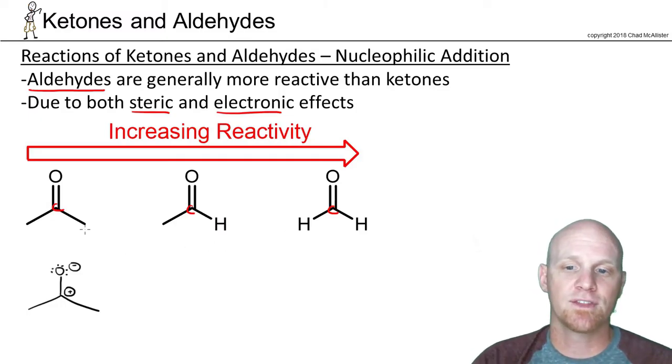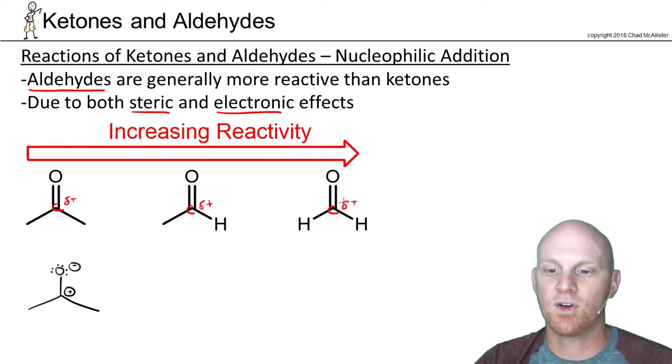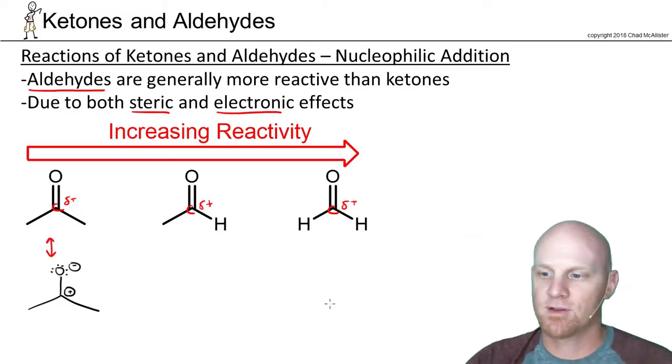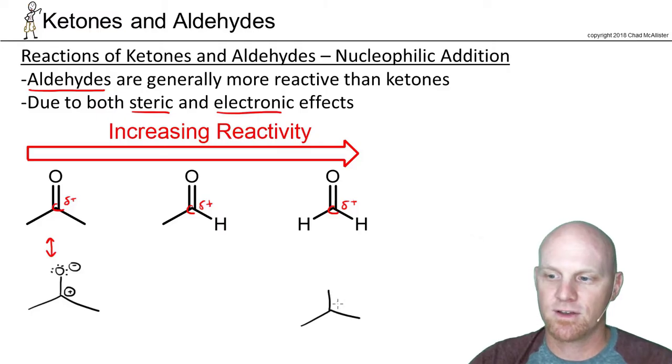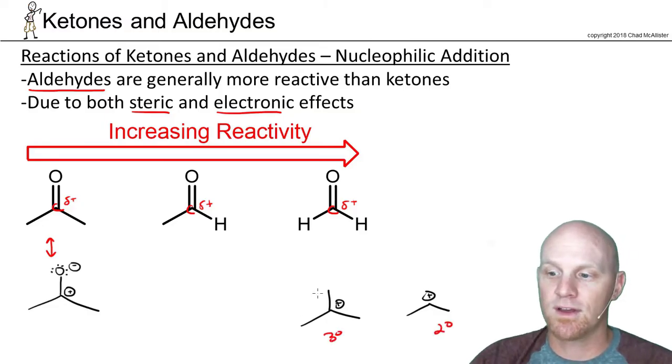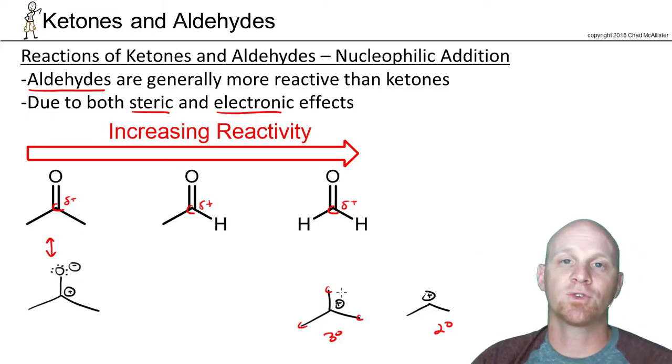But there's a second reason, our electronic effects. So if we look at the partial positive nature of each one of these carbonyl carbons, it's not equal. If you recall, if I were going to compare a tertiary carbocation to a secondary carbocation, we'd say that the tertiary one is more stable than the secondary one. All three of these carbons with their hydrogens are electron donating through hyperconjugation. And because they're donating electron density towards that positive charge, it makes it less positive and more stable.